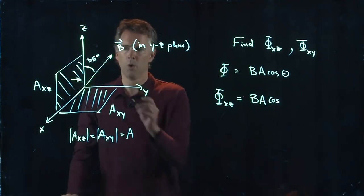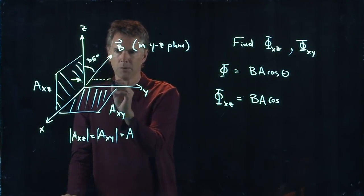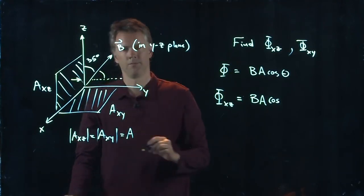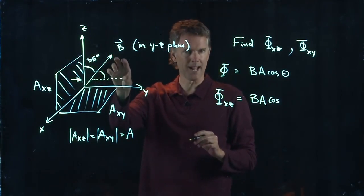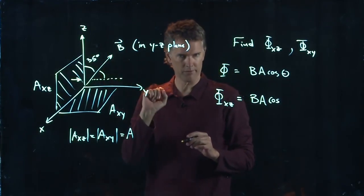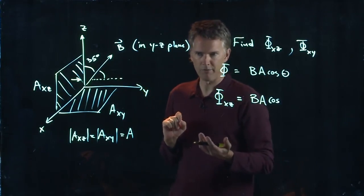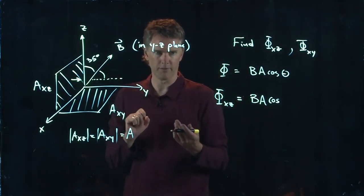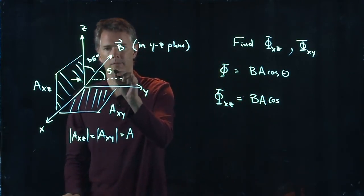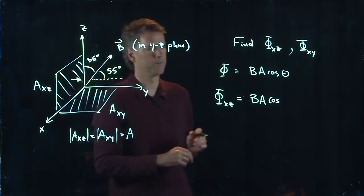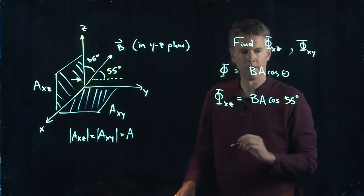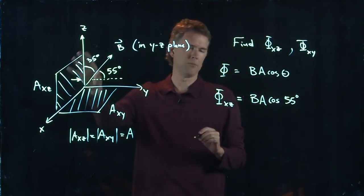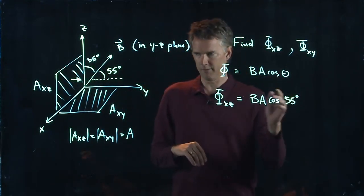So if that's pointing in the Y axis and B is pointing up in this direction, what is the angle between those two? Well, the other angle is 35. So this one has to be 90 minus 35. 90 minus 35 is 55. So this is 55 degrees. So that's the relevant number that you want to put right there. B times A times the cosine of 55 degrees.